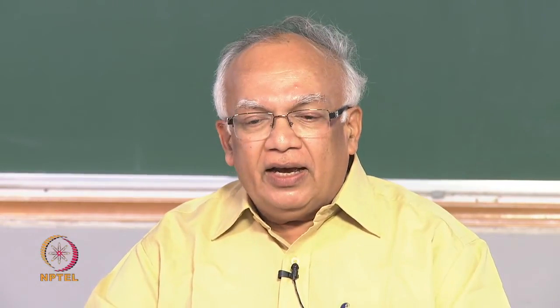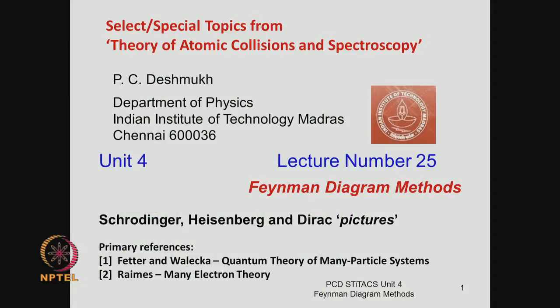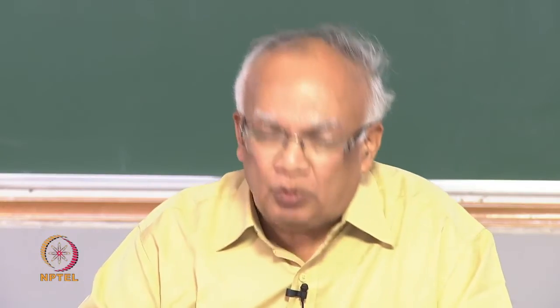After doing the random phase approximation in Unit 3, we will today start with the next unit in which we will introduce Feynman diagram methods. I would like to suggest these two references: Fetter and Walecka's book 'Quantum Theory of Many-Particle Systems' and the book by Reims 'Many Electron Theory.' These will be the primary sources for this unit. Today's class will be a warm-up, revisiting the Schrödinger picture, the Heisenberg picture, and the Dirac picture.